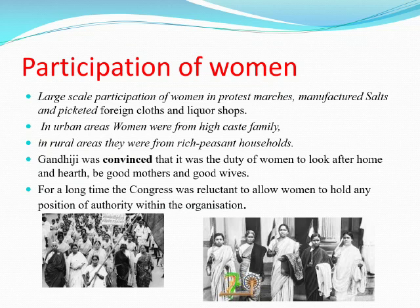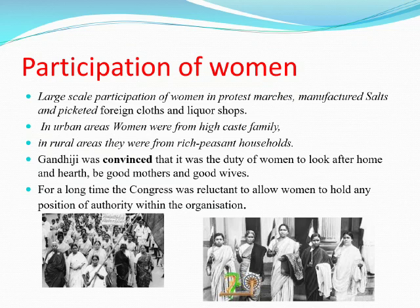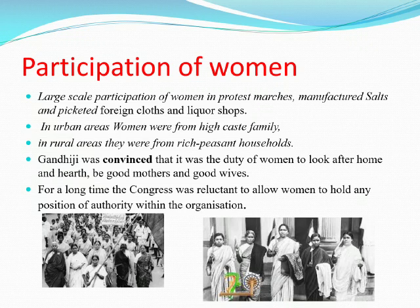There was large-scale participation of women in protests, marches, and pickets of foreign cloth and liquor shops. In urban areas, women were from high-caste families, while in rural areas they were from rich peasant households. Gandhiji was convinced that it was the duty of women to be good mothers and good wives. For a long time, the Congress was reluctant to allow women to hold any position of authority within the organization.